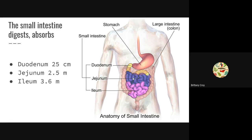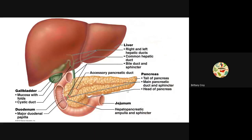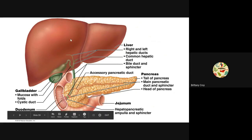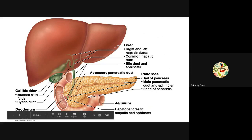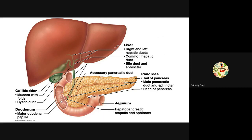The middle section is the jejunum, and then finally the ileum connects into the large intestine. Looking at this picture, the first section of the small intestine is the duodenum, and both the pancreas and the liver are able to make their secretions here at the major duodenal papilla. That is where all of the pancreatic enzymes and bile enter the small intestine, which digests the food and allows it to be absorbed in the rest of the small intestine.